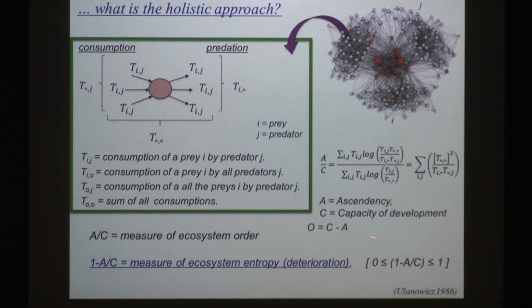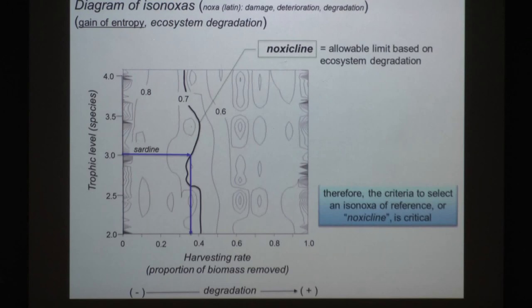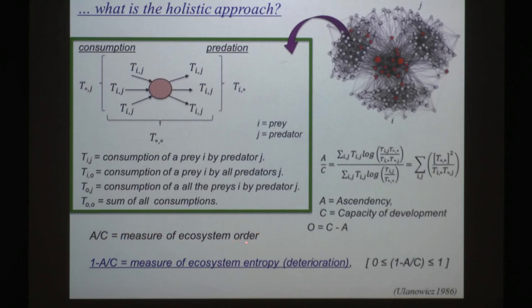The important point is that we can take some indicators of the state of the network — those proposed by Ulanowicz, specifically ascendancy and capacity of development. The difference between these two is the overhead. Ascendancy represents the organization of the ecosystem — the organization of the network. Capacity represents the maximum possible value of ascendancy. If you take this quotient, you can measure a relative order of the ecosystem, and the inverse represents a measure of entropy, which by definition is deterioration.